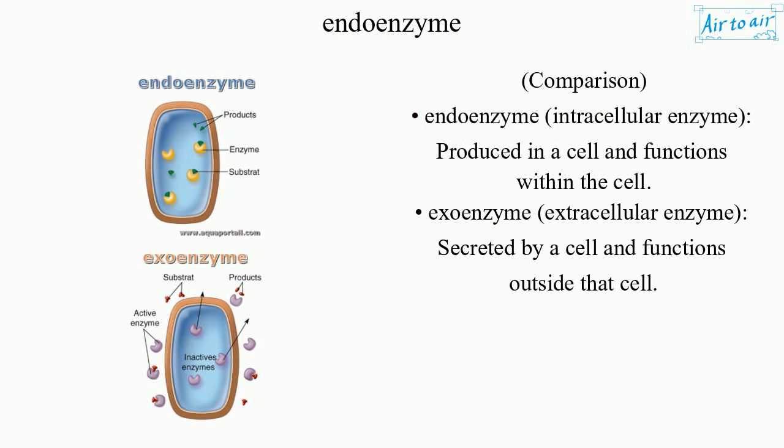Endoenzyme — intracellular enzyme. Produced in a cell and functions within the cell. Exoenzyme — extracellular enzyme. Secreted by a cell and functions outside that cell.